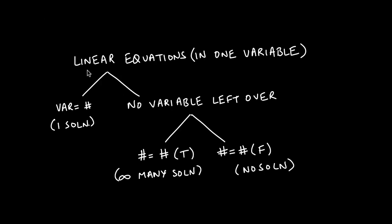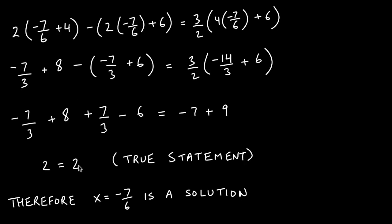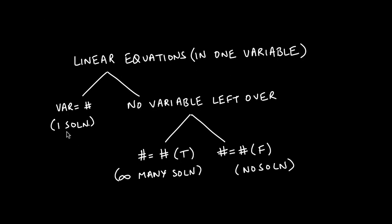As a review: when solving linear equations with one variable, there are three possible outcomes. The first is a variable equaling a number. If plugging that value into the original equation gives a true statement, that number is our solution — exactly what we have here with x = −7/6. This means we have one solution.